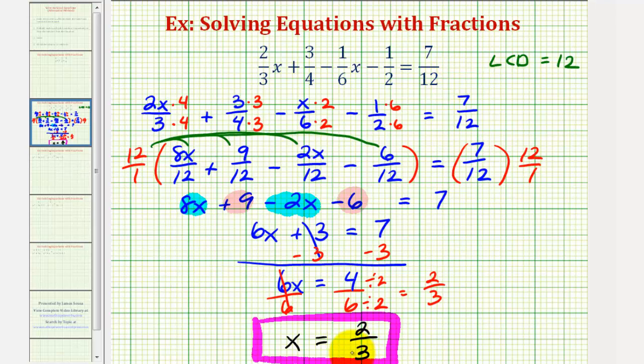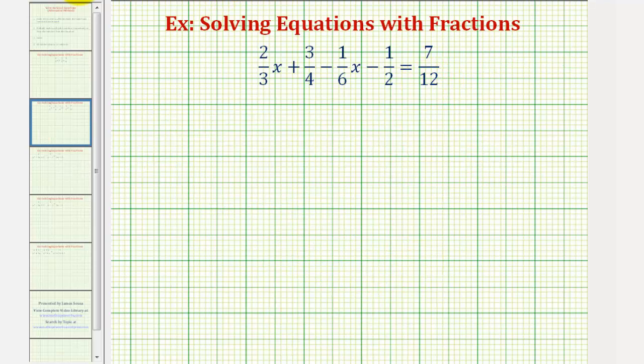Which means if we substitute 2/3 for x into the original equation, it should satisfy the equation. So let's go ahead and take a moment and do that. If x is 2/3, we'd have 2/3 times x, which is 2/3, plus 3/4, minus 1/6 times x, or 2/3, minus 1/2 equals 7/12.